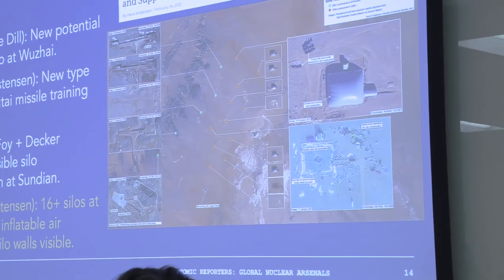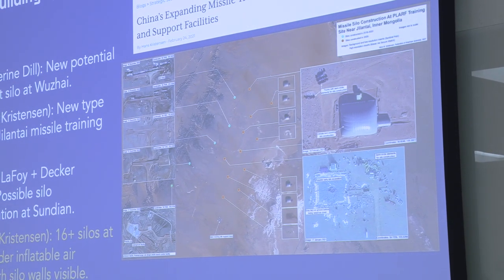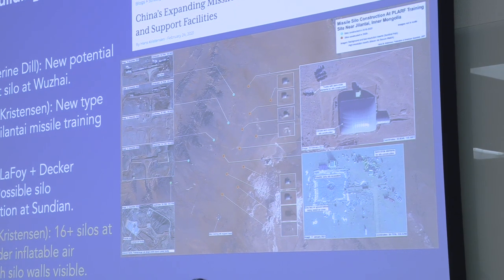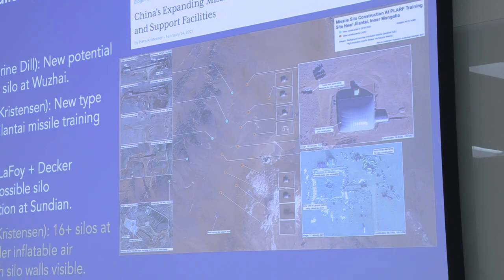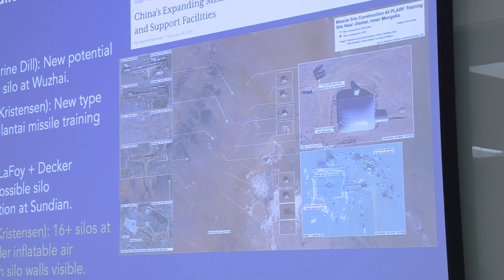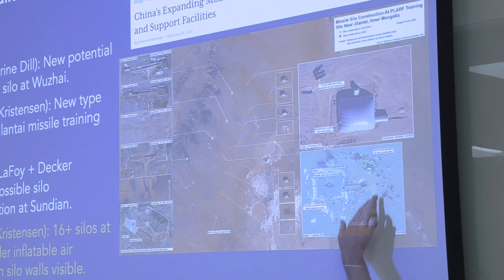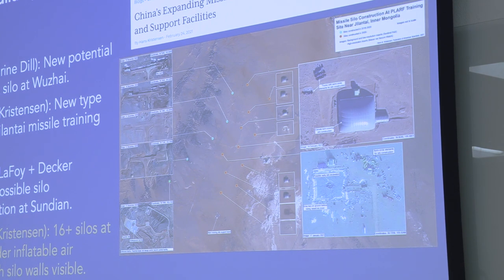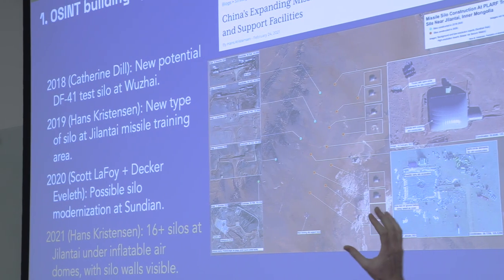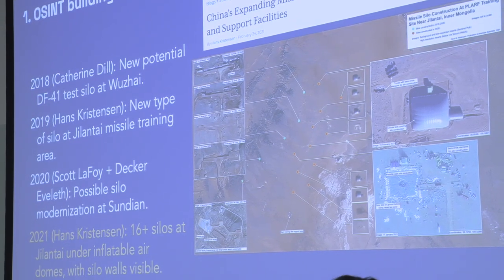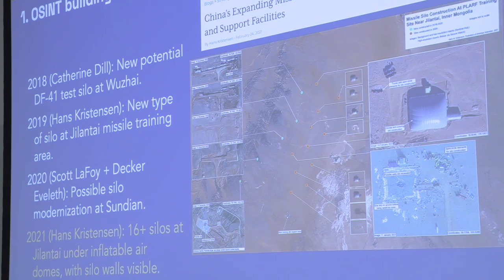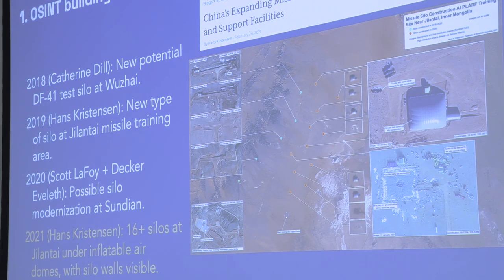The really important thing he saw — which was very new — were inflatable pair domes being built to cover each individual silo hole. These domes are fascinating: we've not seen them anywhere else in China, and they're tied clearly to semicircle structures used to build the silo walls. So we had this great signature: the domes, the silo walls, a big hole in the ground — all connected to what was going to be China's nascent silo program.